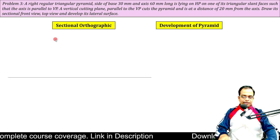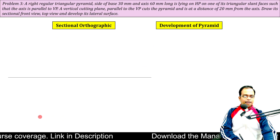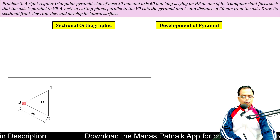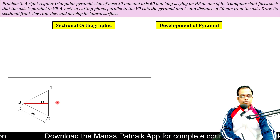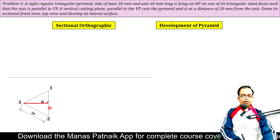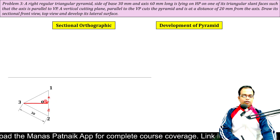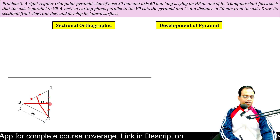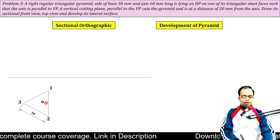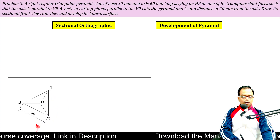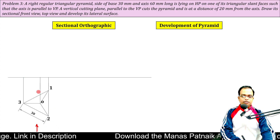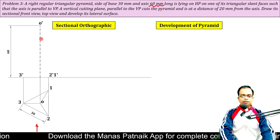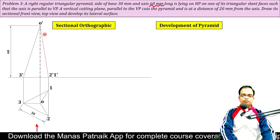Begin by creating an equilateral triangle and locating the center O. From this, draw the projector lines. The length of the axis is given as 60 millimeters, so from here draw a line 60 millimeters and these are the slant edges. The reason for using red color for slant edges will become clear shortly.